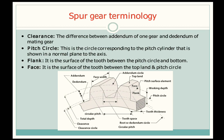Face width is the total width of the spur gear, including the teeth. Both are the same and it is equal to the face width.